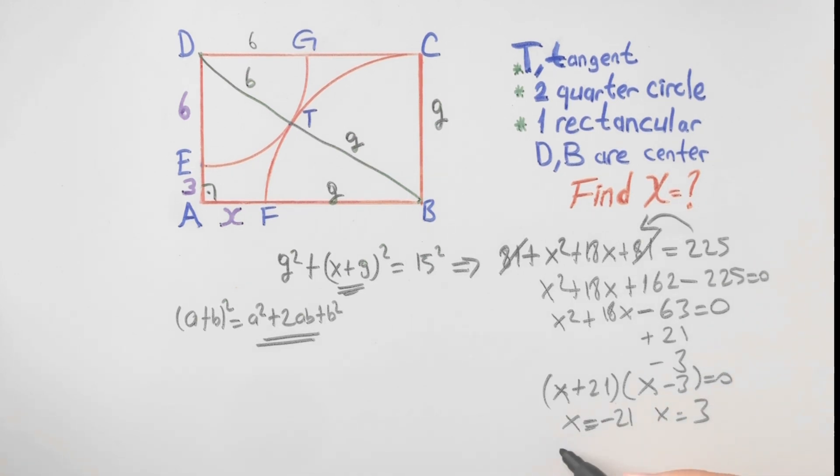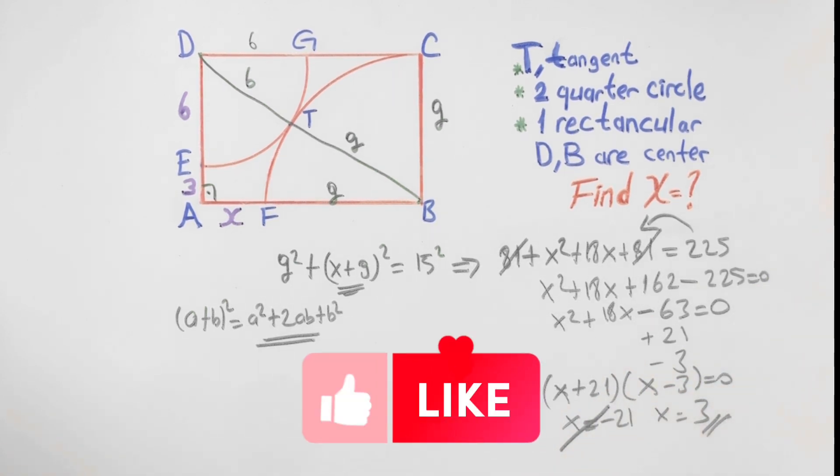Length can't be negative so we refuse this. X equals 3. Thanks.